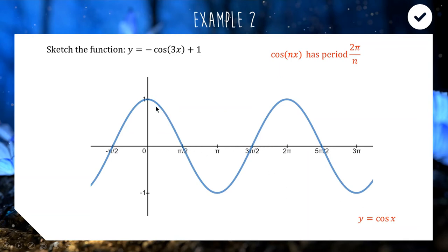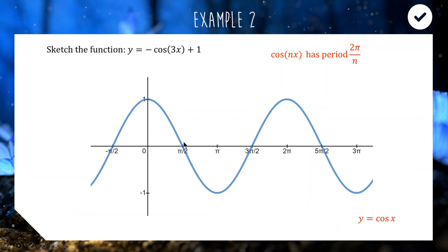That's how long it takes for the graph to repeat. If we put a 2 in there it contracts the graph and makes it repeat twice as often — it halves the period. The simple formula worth remembering is that for cos or sine of (nx), where n is a constant, your period is 2π ÷ n. In this case n is 3, so our period will be 2π/3 — meaning instead of repeating every 2π radians, we repeat every one-third of 2π radians.